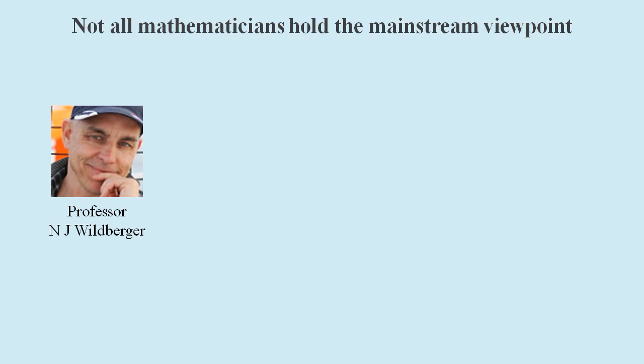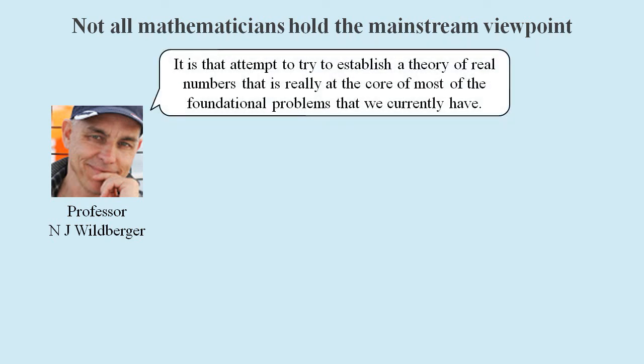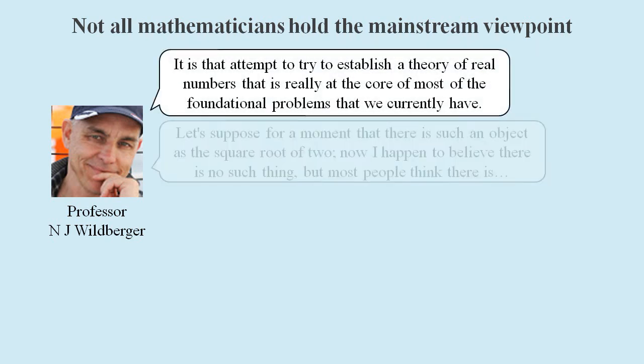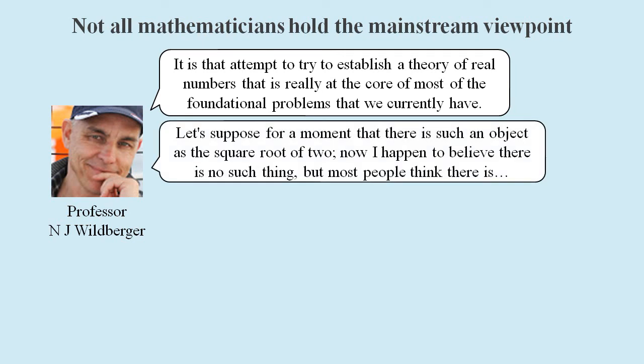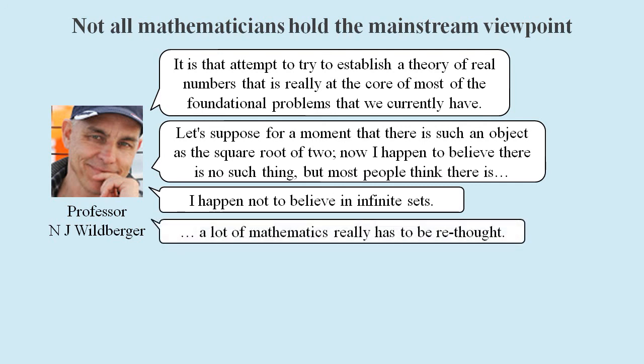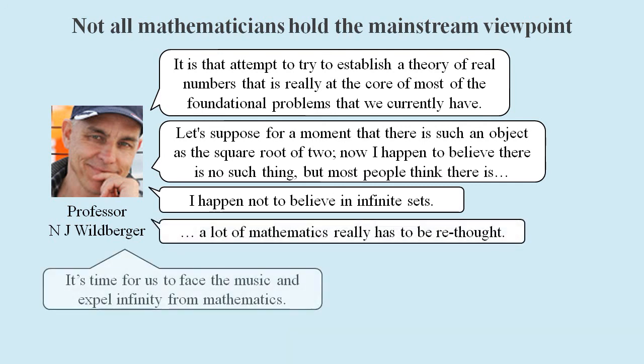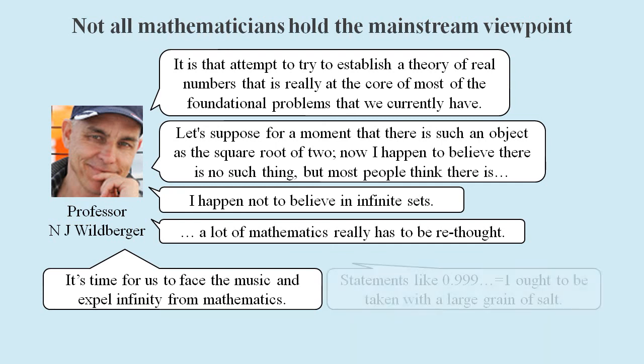A few mathematicians reject infinity, and one mathematics professor has spoken out. He claims that real numbers are at the core of most foundational problems. There is no such thing as the square root of 2. There are no such things as infinite sets. We need to rethink a lot of mathematics. We need to expel infinity. And the statement 0.9 recurring equals 1 should be taken with a large grain of salt.